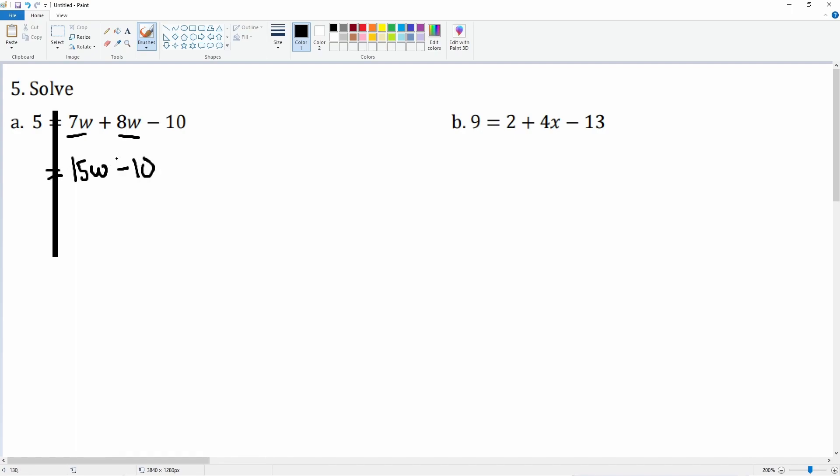On the right hand side, bring down the equal sign, bring down that 5. Now it becomes a two-step problem. To get rid of the negative 10 on the right hand side, we add 10 to both sides. Negative 10 plus 10 cancels, making zero. Bring down the 15w. 5 plus 10 is 15.